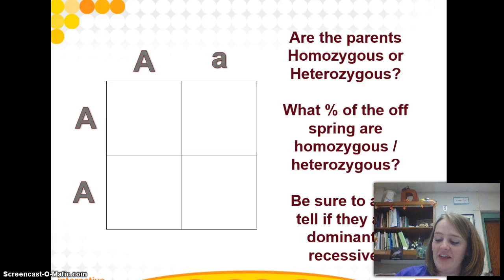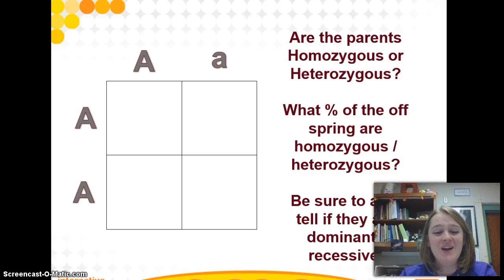So let's do a cross together. Remember, you're going to start by drawing the square. For this exercise, I have given you the genotype, or the genetic makeup, of both the mother and the father. Which one do you think is the genotype for the mother? If you were saying this one, you are correct, which makes the genotype for the father right here. But are they homozygous or heterozygous? If you said homozygous dominant for the mother and heterozygous for the father, you are correct.